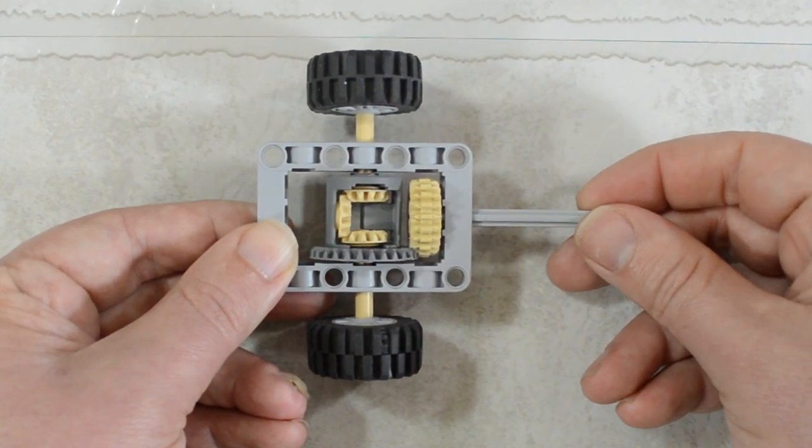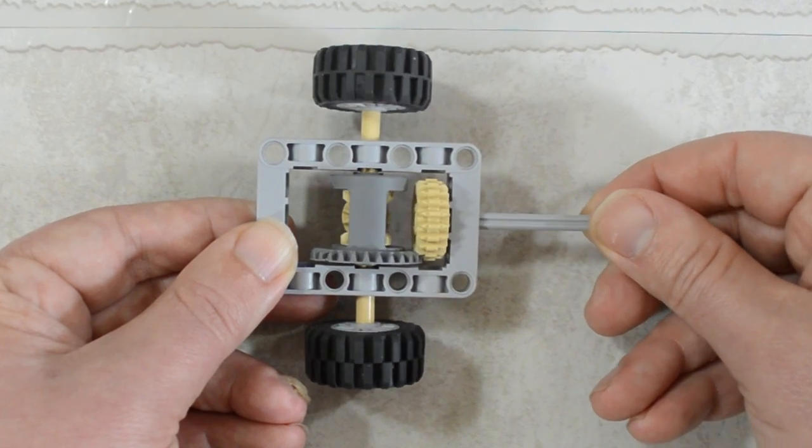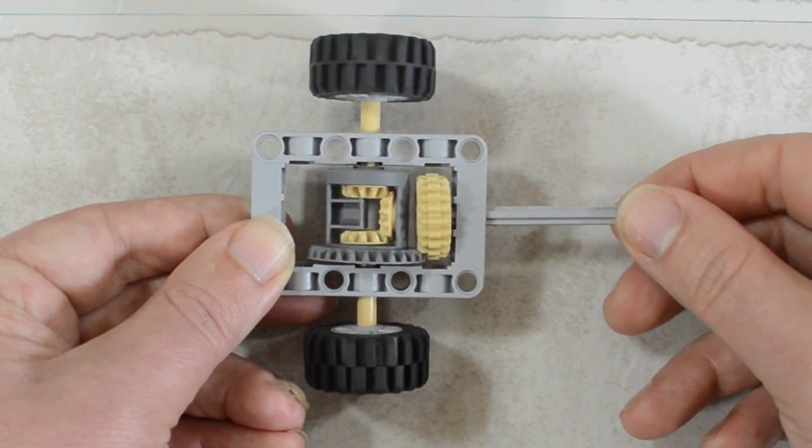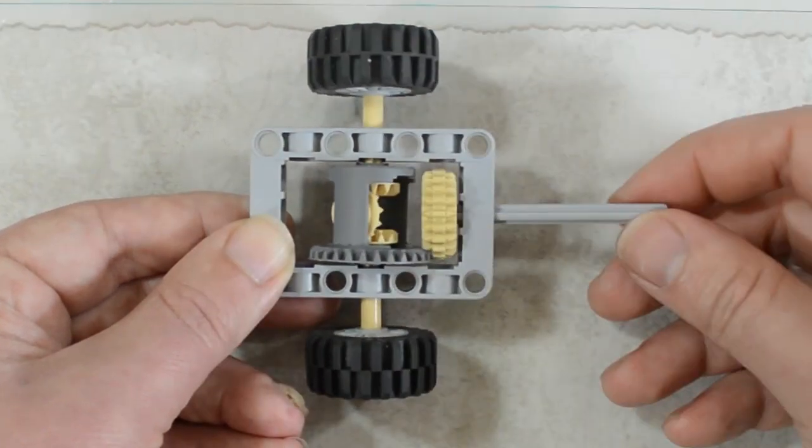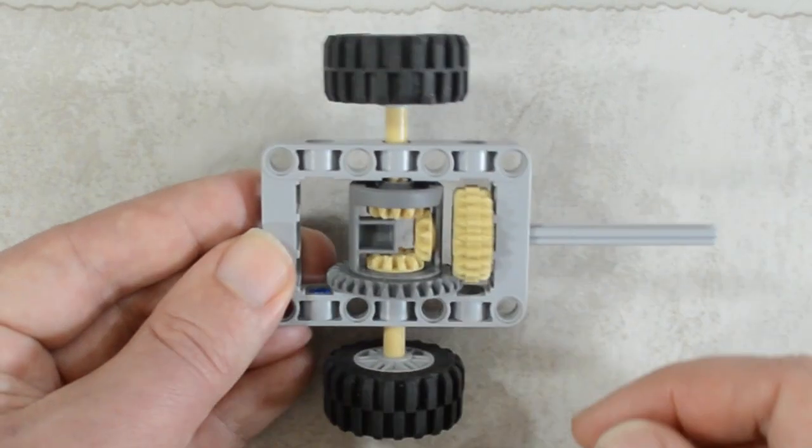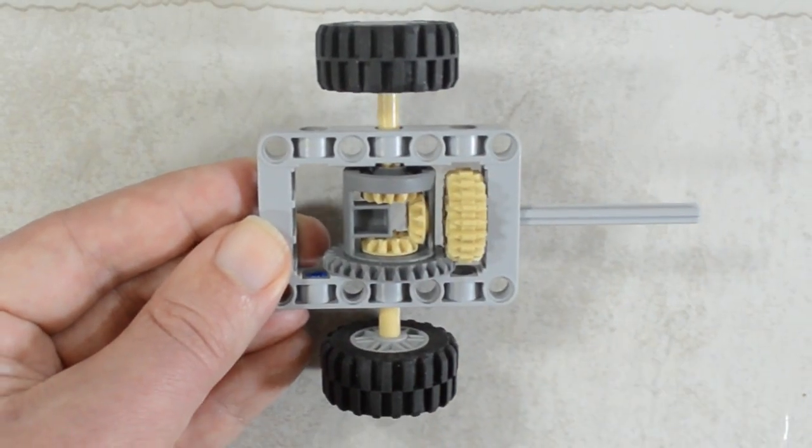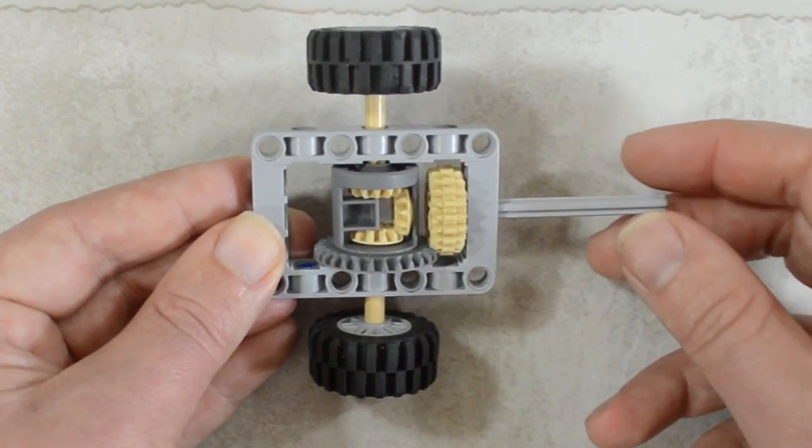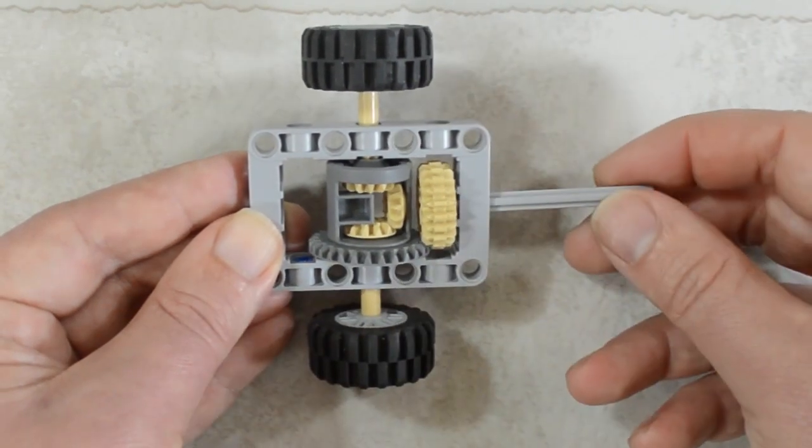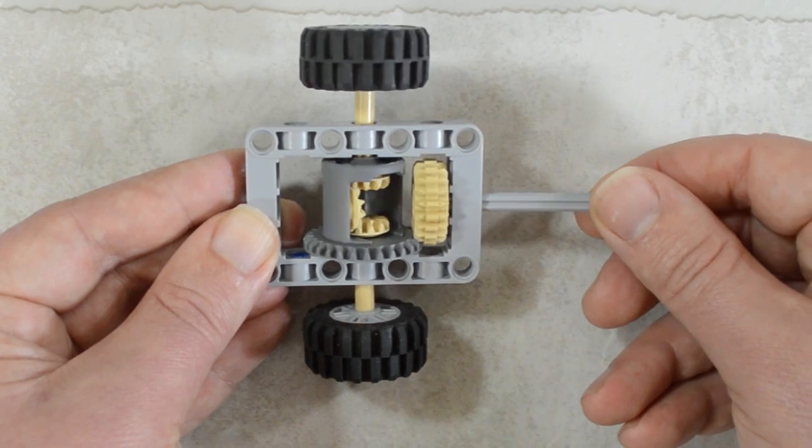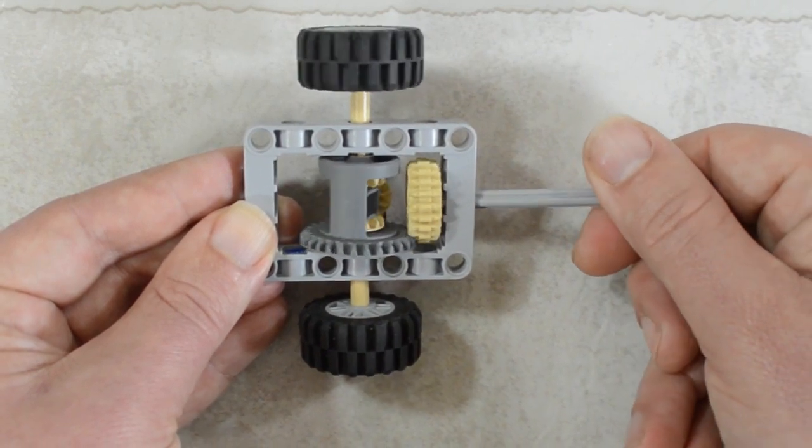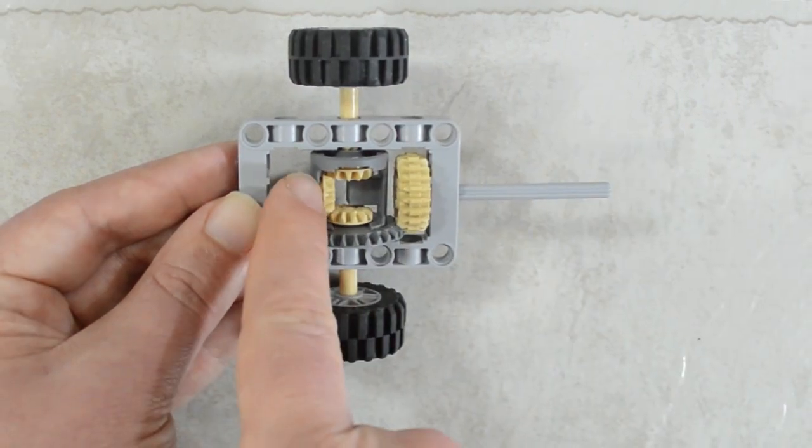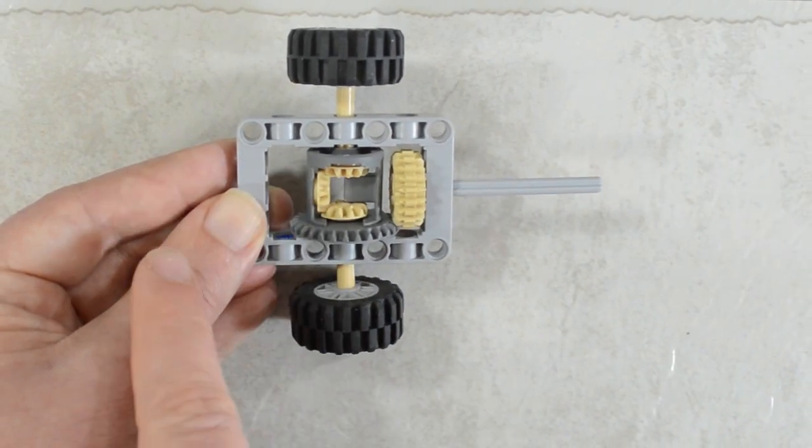So as we turn our main drive, you can see this ring gear on the outside turns. And as it turns, it spins both of those wheels. Now notice what happens when we stop one or the other sides and see the effect on the other wheel. So we'll stop this one and we'll turn our drive. And notice that that tire continues to spin because of this fly gear in the middle, which is called our planet gear.